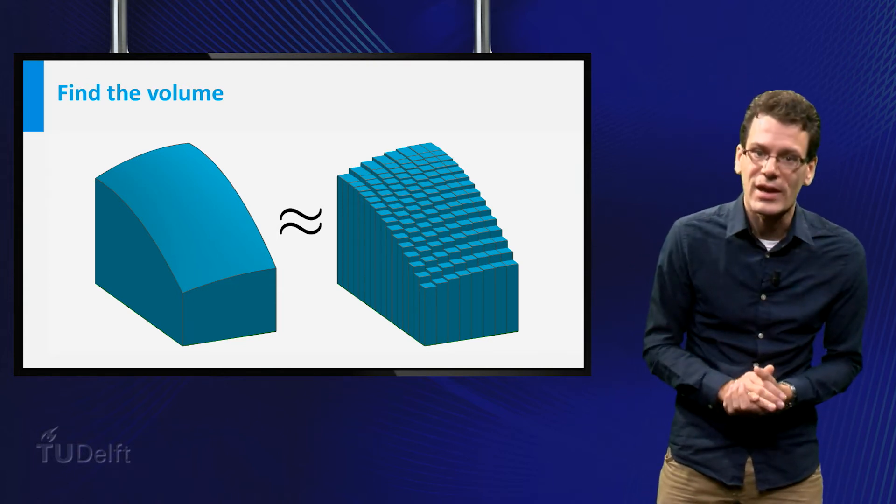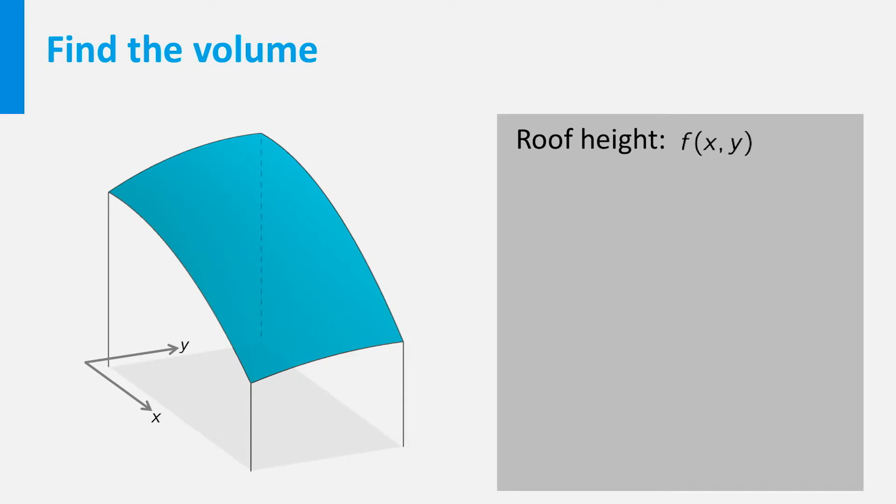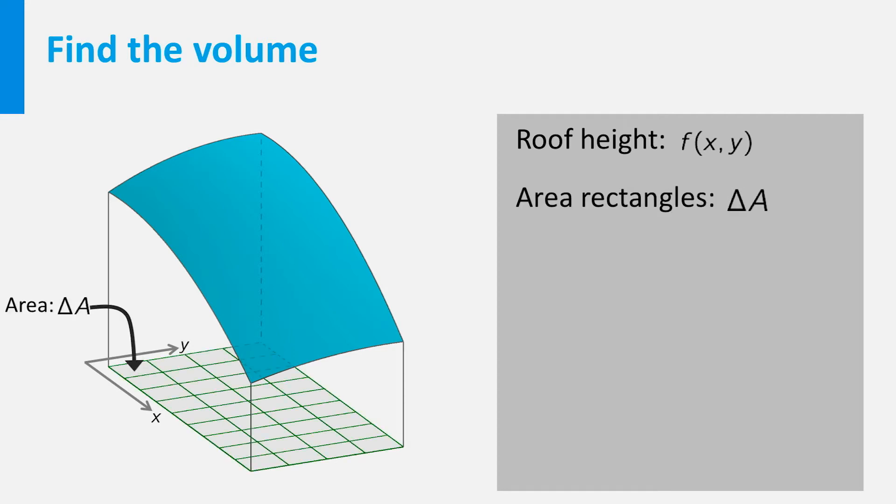Let's make this idea more precise. We introduce coordinates x and y on the base of the building. Then the height of the roof is a function f of x and y. Now we divide the floor into small rectangles, say of area delta A each.